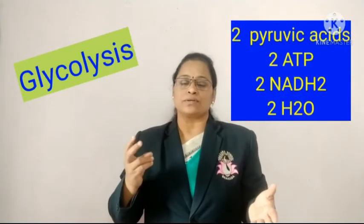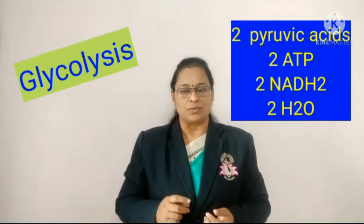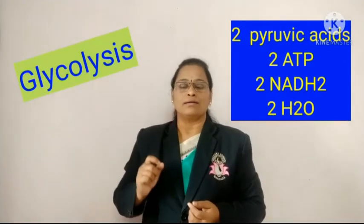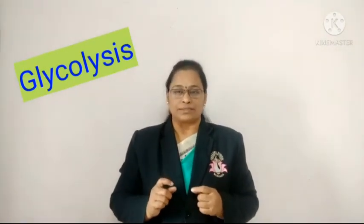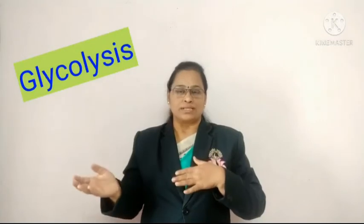Glycolysis is the splitting of sugar — a six-carbon compound is broken down to a three-carbon compound called pyruvic acid or pyruvate. This process takes place in the cytoplasm. In glycolysis, along with two molecules of pyruvic acid, two molecules of ATP, two molecules of NADH₂, and two molecules of water are formed. Note that carbon dioxide is not formed in glycolysis. Glycolysis is the common and compulsory step for both aerobic and anaerobic respiration.